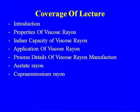The coverage of the lecture will include an introduction, properties of viscose rayon, Indian capacity of viscose rayon, applications of viscose rayon, then the process details of viscose rayon manufacture, followed by acetate rayon and cuprammonium rayon. Although the total production is much more in the case of viscose rayon than acetate and cuprammonium rayon, some other raw materials will also come from petrochemical sources.